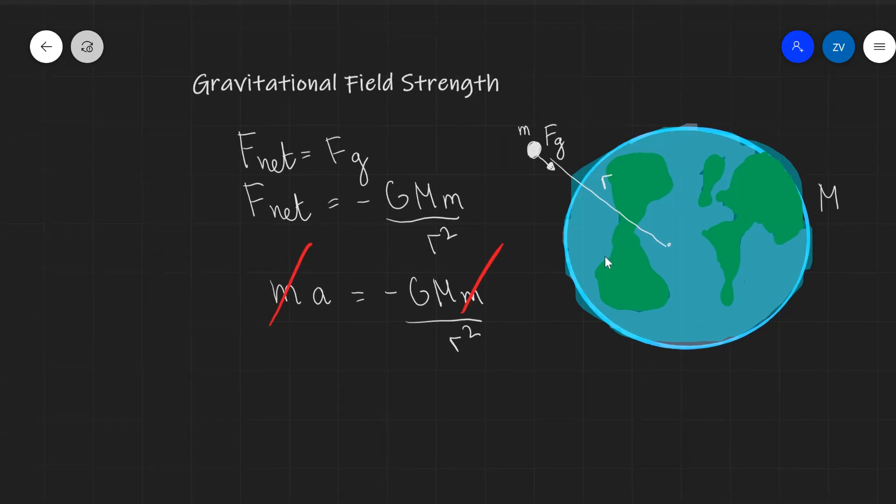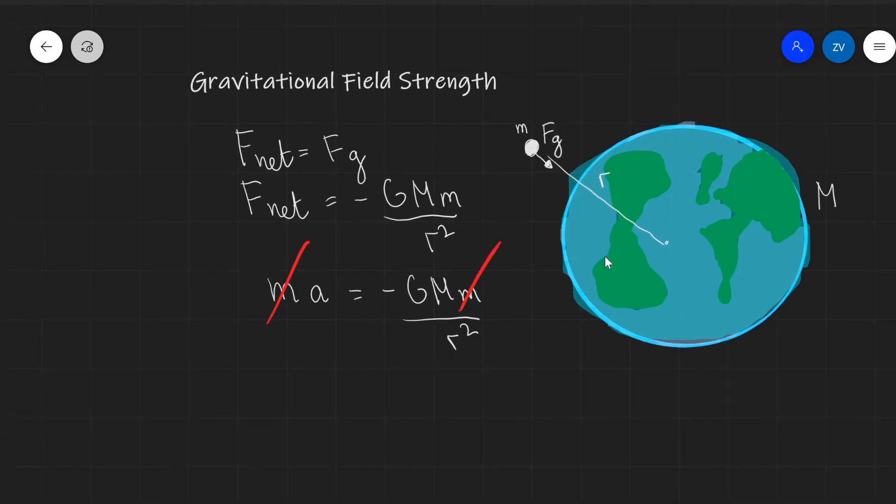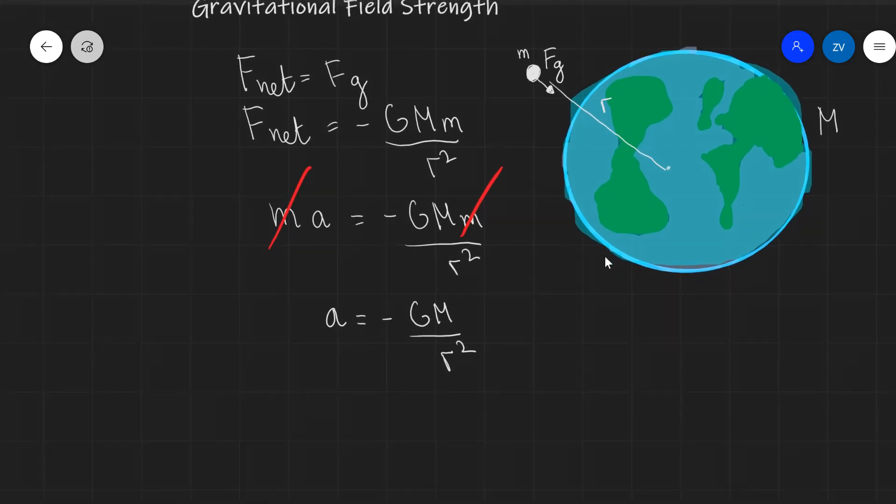Once we've canceled out the two masses, we actually have an expression for the gravitational acceleration, which is minus GM over R squared. Typically, we give this the symbol g. So let's write down g is equal to minus GM over R squared.